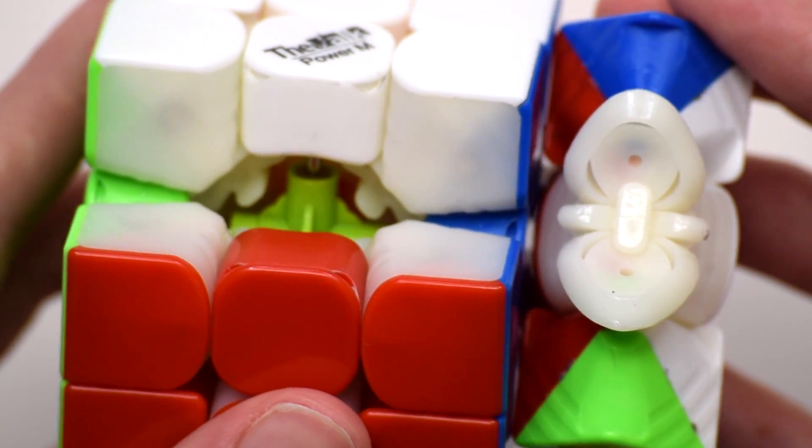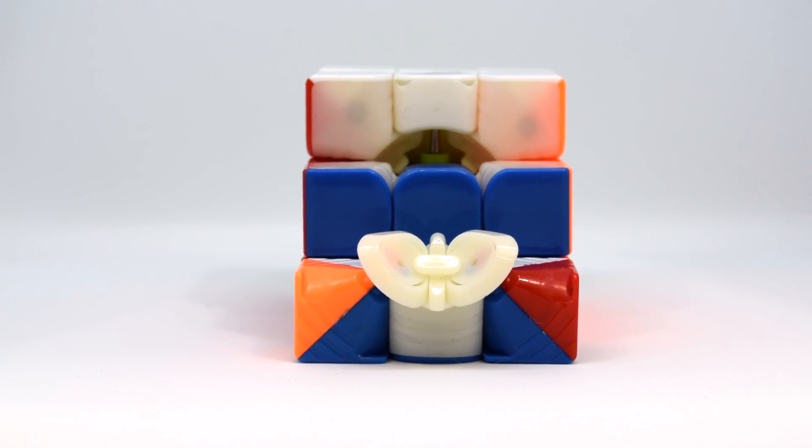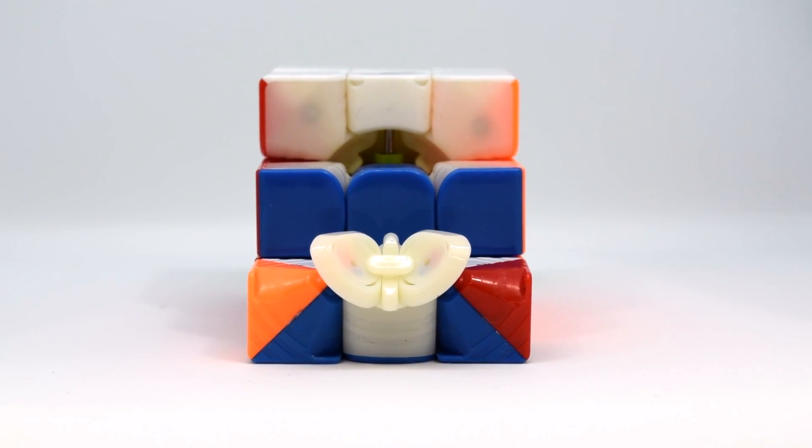The biggest visible change is the primary internals. This helps with the smoothness of the cube and makes the turning less clacky and more smooth than on the original Valk.